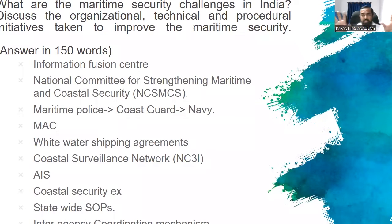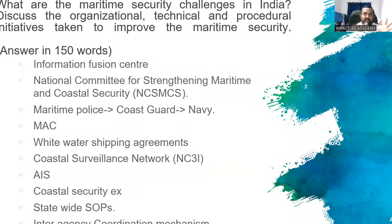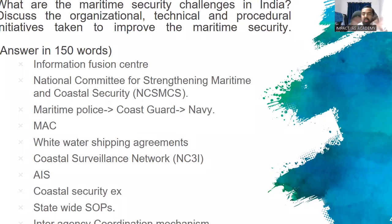For organizational aspects: we have Information Fusion Centers capturing data from all radars and fusing it into a central picture of coastal activity. We have a National Committee for Strengthening Maritime and Coastal Security as the apex body. There is a separate Maritime Police Force guarding up to 12 nautical miles, then the Coast Guard up to 200 nautical miles, then the Navy beyond that. A Multi-Agency Center was created so all agencies sit together and share intelligence, addressing the earlier intelligence-sharing shortage.